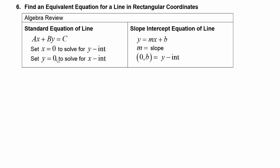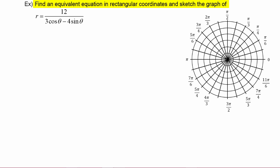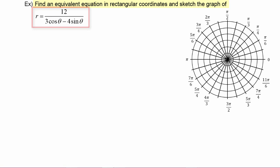Let's see how these equations can help us make a polar equation graph. In this example we have to find an equivalent equation in rectangular coordinates and sketch the graph of r equals twelve over three cosine theta minus four sine theta. This would be very challenging to graph directly in polar coordinates because we would need to plug in theta for cosine theta and sine theta for every point from zero to two pi — that would be a lot of work.